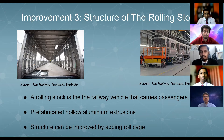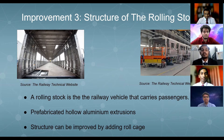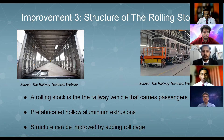We are suggesting an improvement to the structure of the rolling stock. By referring to the pictures in the slides, a rolling stock is a railway vehicle that carries passengers. It is made out of hollow aluminium extrusion. We are suggesting that the structure can be improved by adding a roll cage.